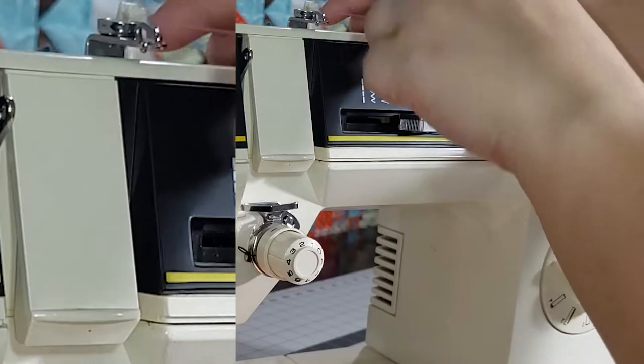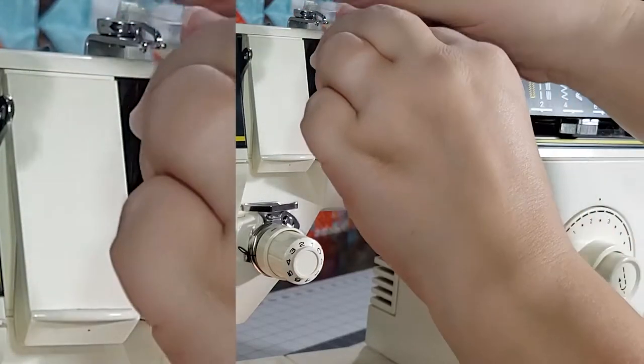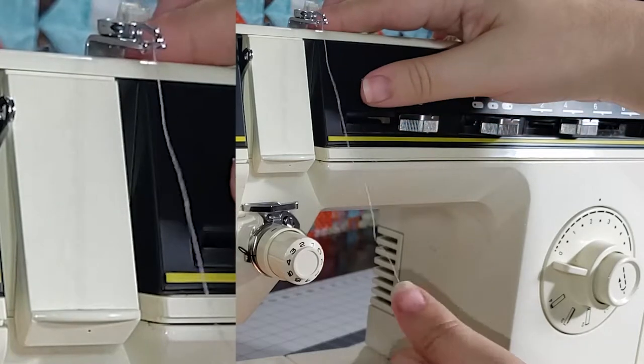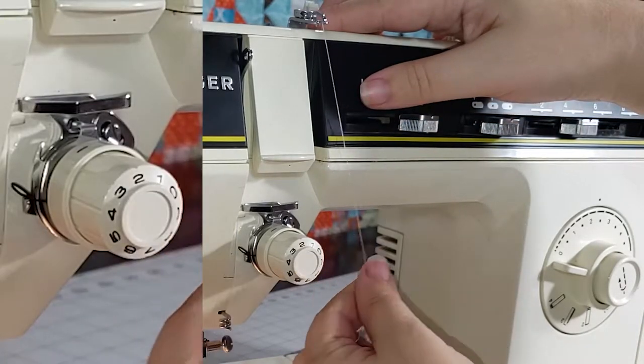Lead the thread first through the plastic thread guide, then through the metal thread guide. Bring the thread down and toward the left between the tension discs while holding the thread taut with your other hand.